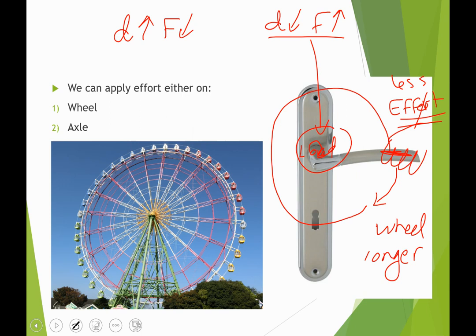But if your doorknob is broken, you need to apply force directly on the axle to open the door, and you will find it very difficult because you need more force — the distance is very short. Another example is the ferris wheel. In a ferris wheel, we apply the effort on the axle. Imagine someone standing next to the ferris wheel trying to push people by applying force on the wheel — it would be very difficult. So we apply force on the axle, and the wheel turns in the same direction, but we need more effort.